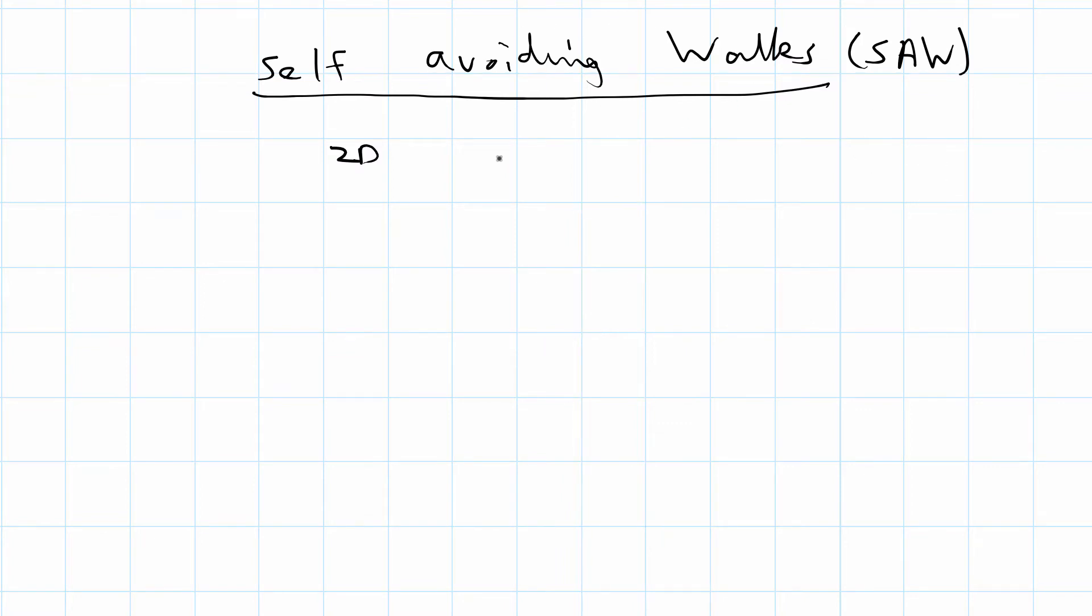Self-avoiding random walks are random walks that have the additional property that they do not cross. A regular random walk can go back to where it started and can pass and create crosses, but a self-avoiding walk cannot do that. You are not allowed to move back to a place where you already were and so you cannot create crosses.